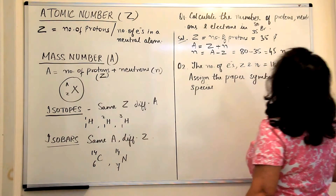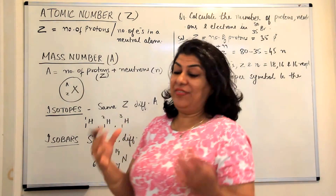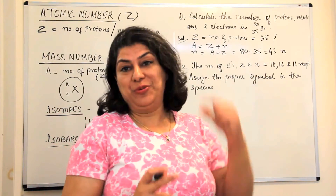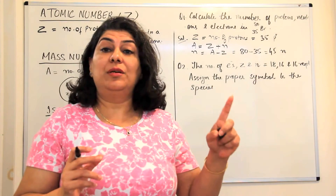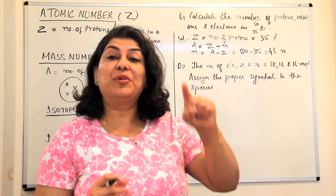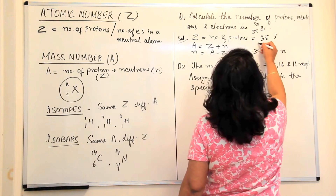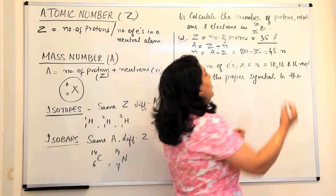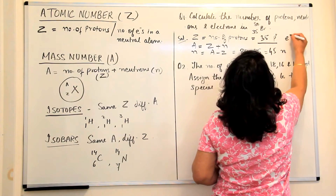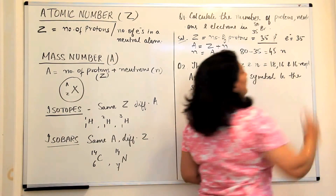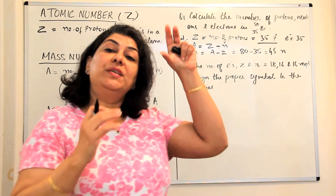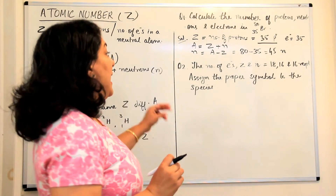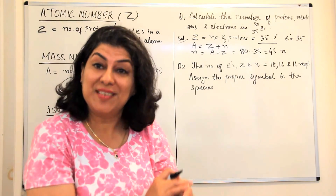Now, what is the number of electrons? If the atom is neutral, the number of protons should be equal to the number of electrons. Since the number of protons is 35 and no charge is shown, we assume the atom is neutral. Therefore, electrons should also be equal to 35. That is how from the symbol you can calculate the subatomic particles, and from subatomic particles you can derive the symbol too.